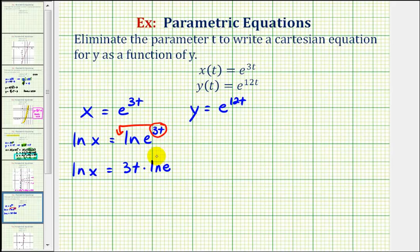But natural log e is equal to one, so this simplifies. So now we'll just divide both sides by three to solve for t.